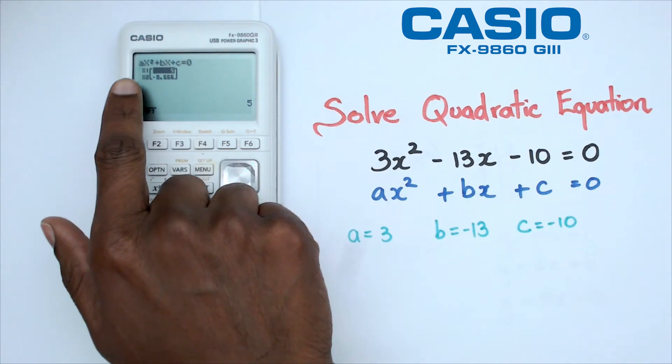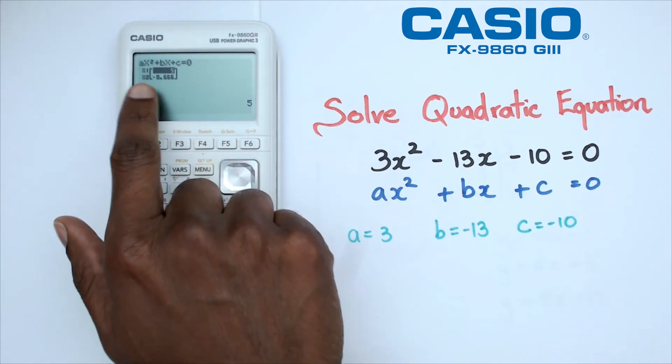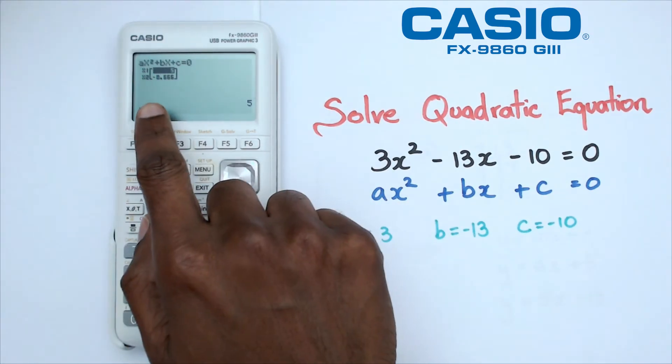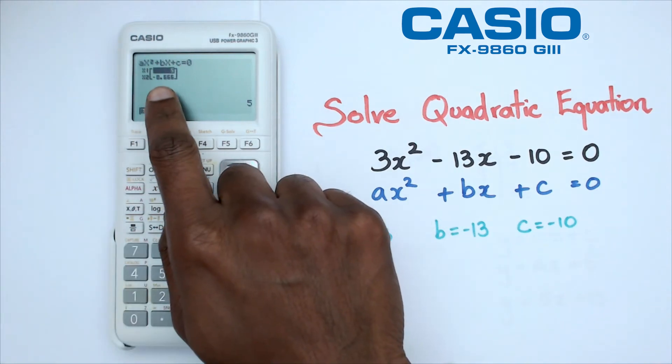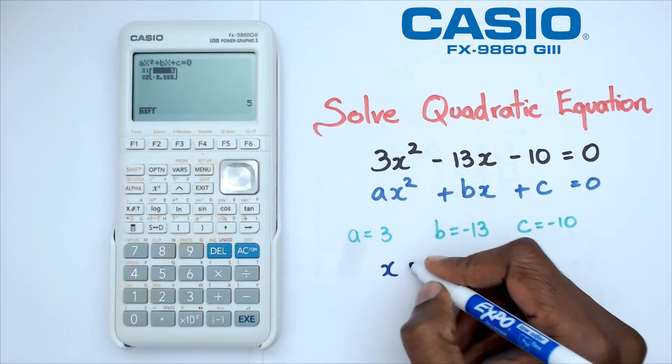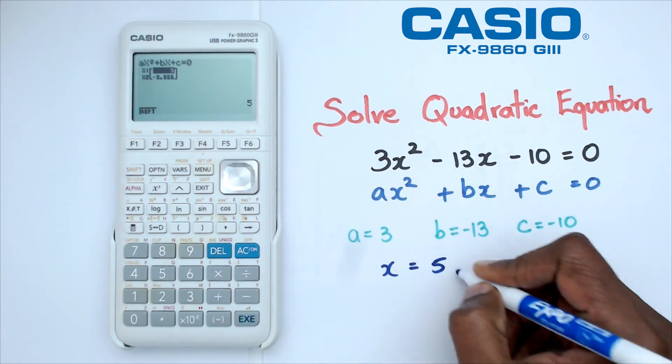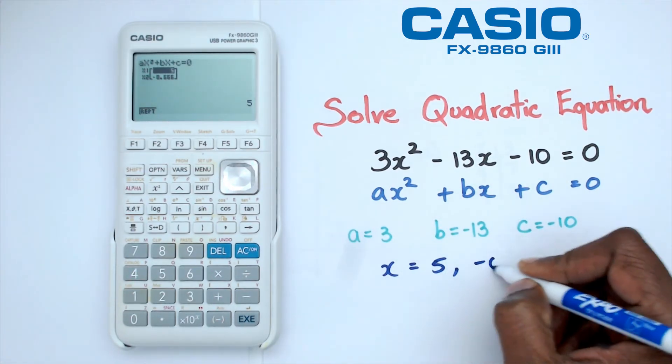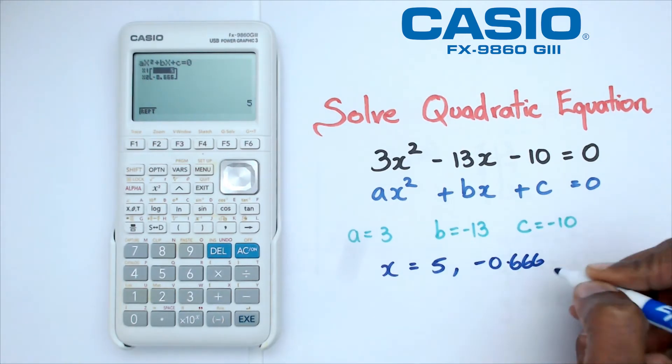Now notice the two answers here. Our first solution for x is 5 and our second solution is negative 0.666. So we can actually write our answers as x equals to positive 5 or negative 0.666.